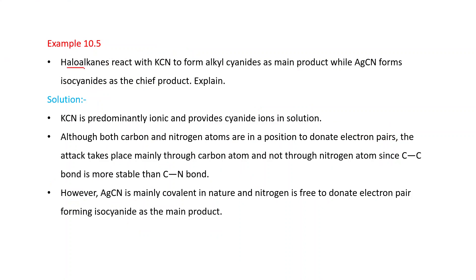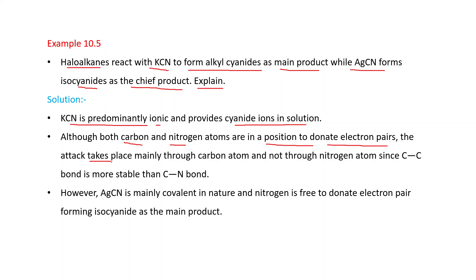Question: haloalkanes react with KCN to form alkyl cyanides as the main product, while AgCN forms isocyanides as the chief product — explain. KCN is predominantly ionic and provides CN⁻ ions in solution. Although both carbon and nitrogen can donate electron pairs, attack takes place mainly through carbon since C–C bond is more stable than C–N bond, giving nitrile. However, AgCN is mainly covalent in nature, so nitrogen is free to donate electron pairs, forming isocyanide as the main product.